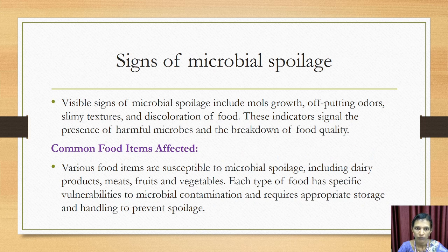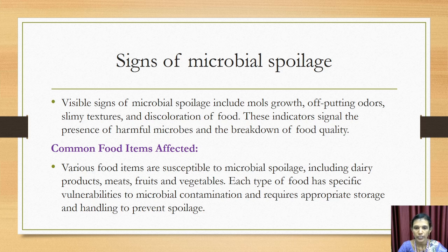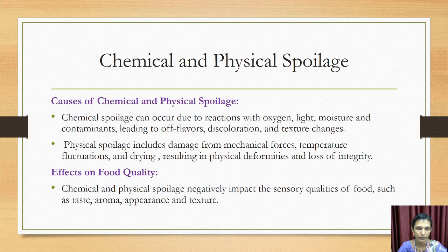Signs that food is spoiled include mold growth on food, off-putting odors, slimy textures, and discoloration. These are indications we can easily see to determine whether food is spoiled. Commonly susceptible food items include dairy products, meat, fruits, and vegetables. Each type of food has specific vulnerabilities to microbial contamination and requires appropriate storage and handling to prevent spoilage.